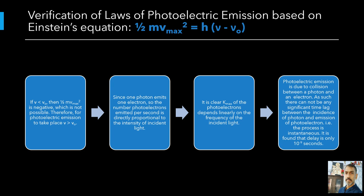This has happened because in Einstein's picture, photoelectric effect arises from the absorption of a single quantum of radiation by a single electron. The intensity of radiation, that is proportional to the number of energy quanta per unit area per unit time, is irrelevant to this basic process.